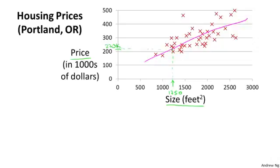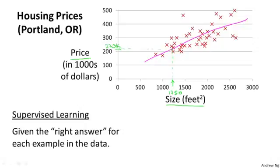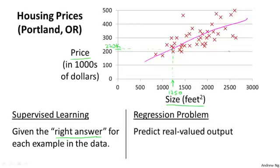So this is an example of a supervised learning algorithm. It's supervised learning because we're given the right answer for each of our examples. Namely, we're told what was the actual price that each of the houses in our dataset was sold for.